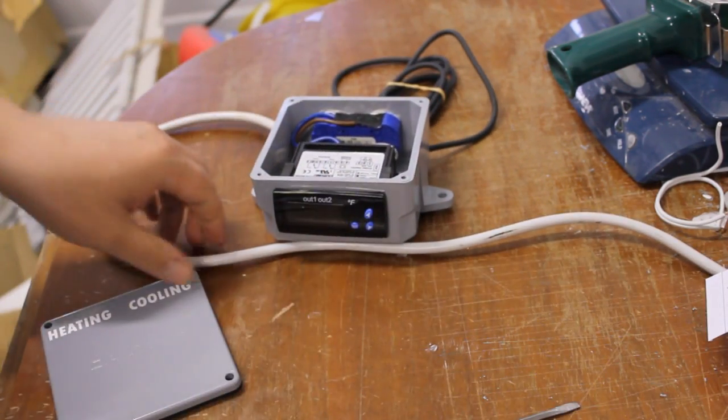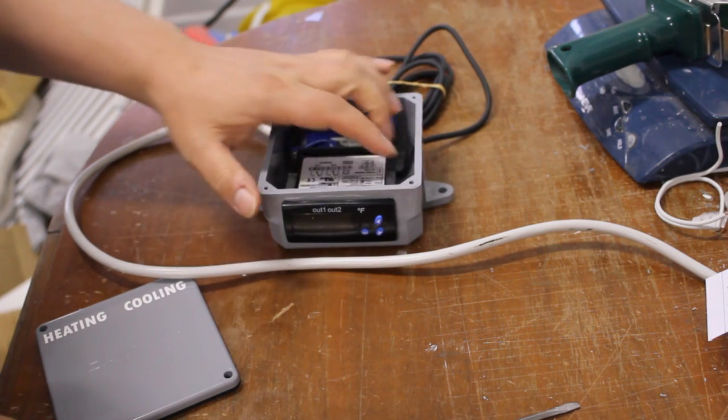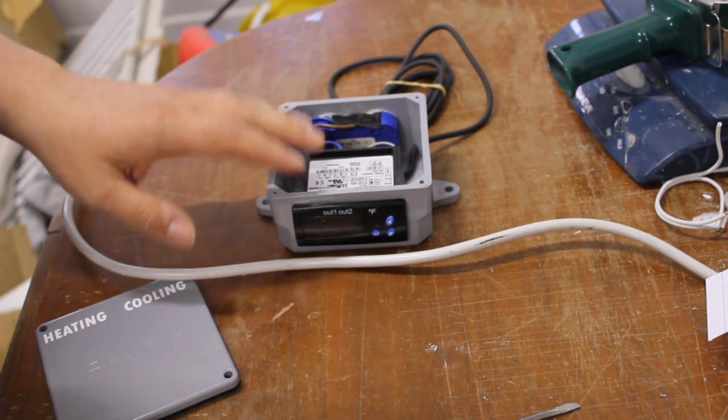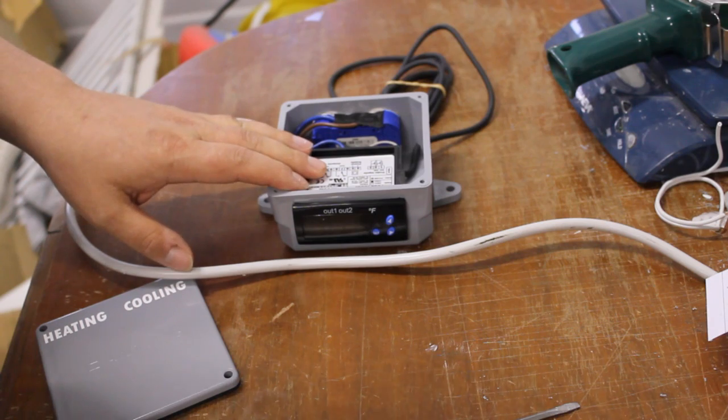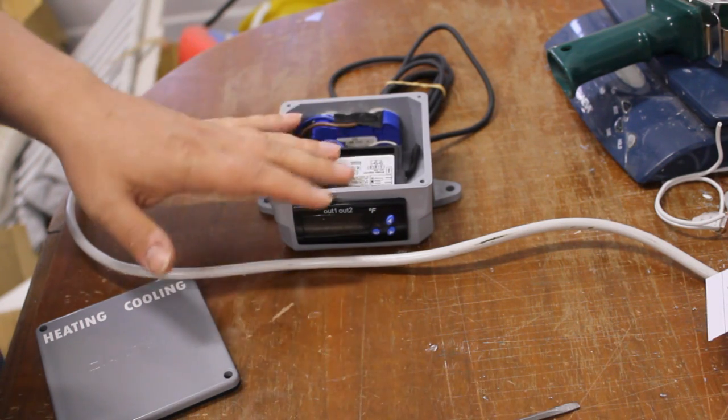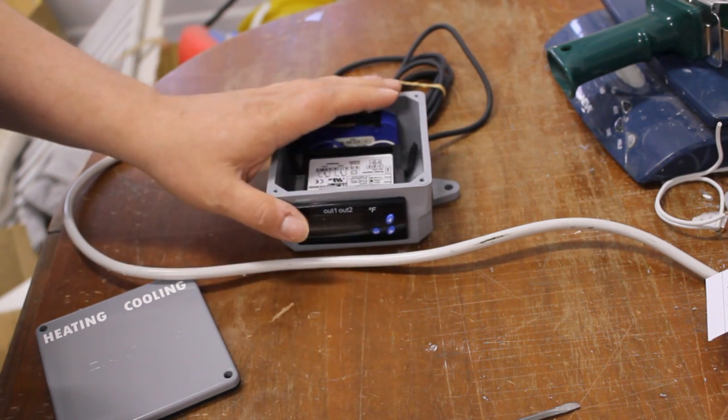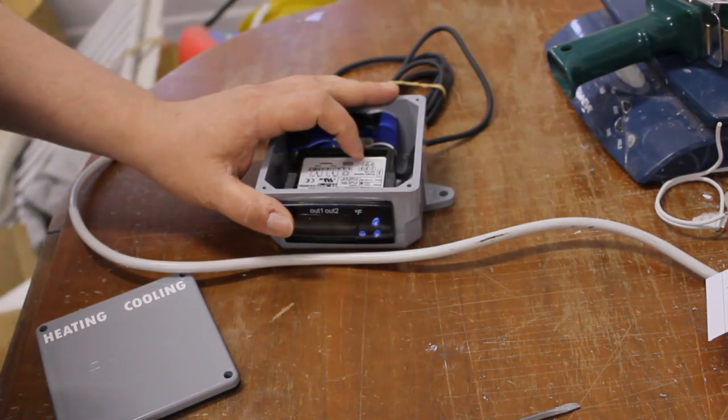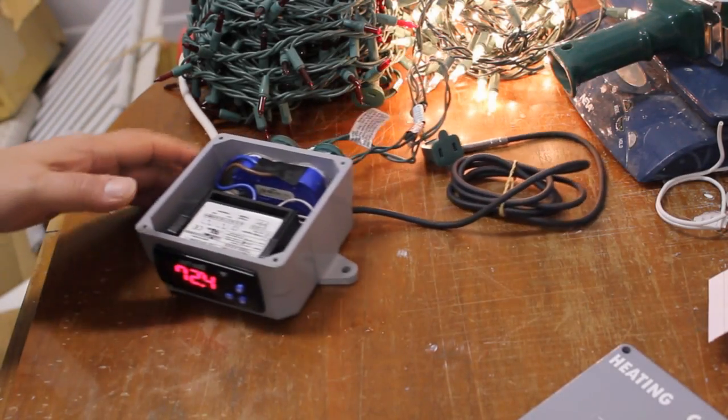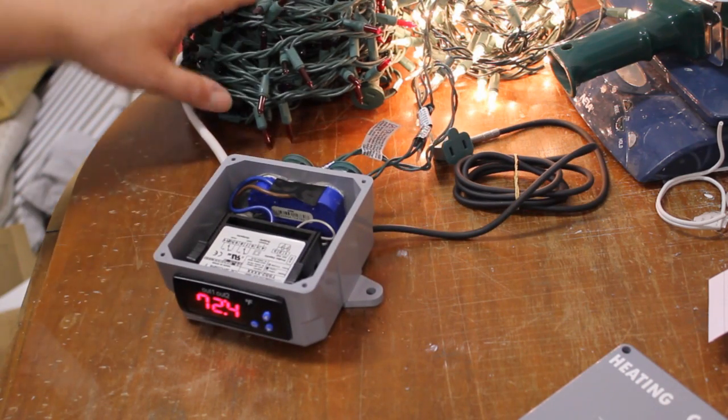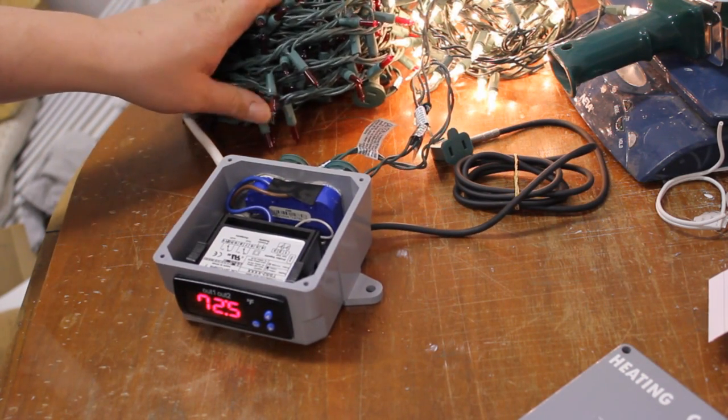So one word of warning since you're only using one probe here when you first plug this in the factory settings assume that you're going to be using two probes and an alarm will go off telling you that there's one of the probes are malfunctioning. Now I have the unit powered up and I have some Christmas lights plugged in to the heating and cooling circuits. And I'm just representing the heating with the red and the cooling with the white.